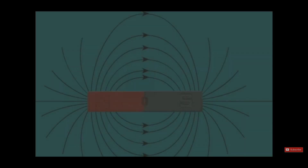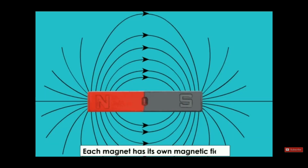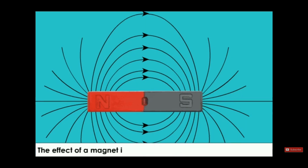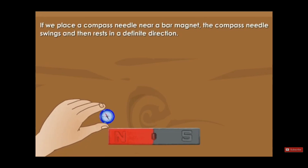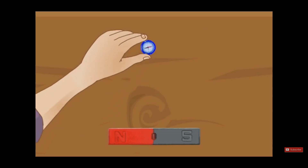Let's talk about another property — number five: the magnet and the magnetic field. Each magnet has a magnetic field around it. The magnetic field is the effect of the magnet in the region around it. The magnetic field is the region where the magnetic force appears. If we get a compass near to the magnet, the compass needle will swing and move because we put the compass in the magnetic field of the magnet.